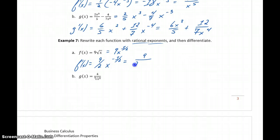This would become 9 halves x to the negative 1 half, or 9 over 2x to the 1 half if we make that a positive exponent. And then if we wanted to, we could even turn that back into radical notation to write it as 9 over 2 root x.